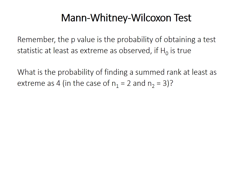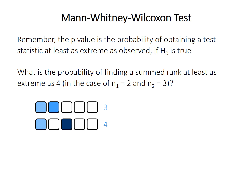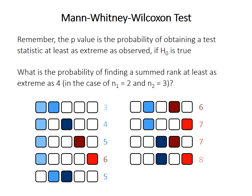Remember that the p-value is the probability of observing a test statistic at least as extreme as you did observe, if the null hypothesis is true. In our example, what is the probability of finding a rank sum at least as extreme as four? We have two observations in sample one and three in sample two. Because of the small sample size, we can calculate the p-value exactly by considering all possible rank sum outcomes for sample one's two data points — there are ten different possible outcomes, shown here with their rank sums.